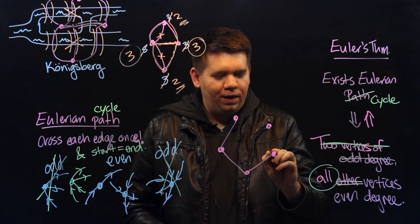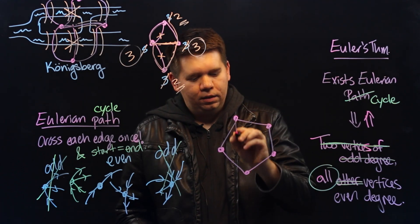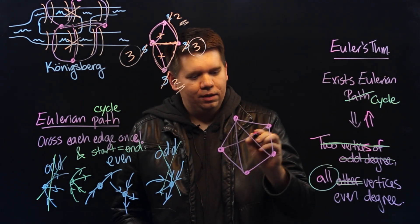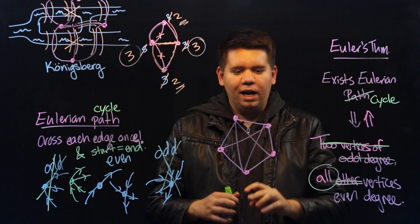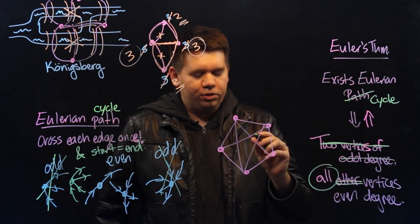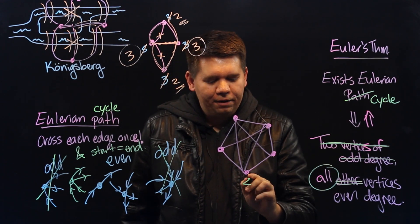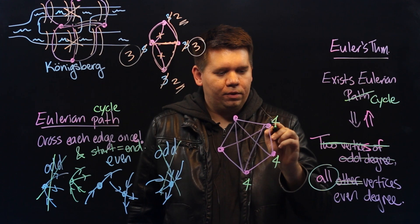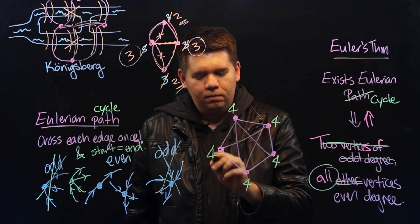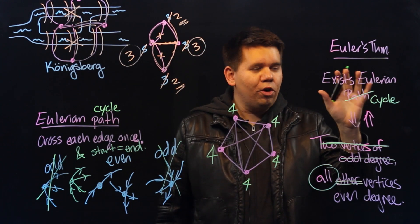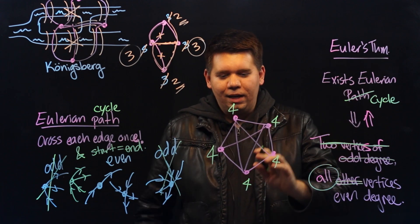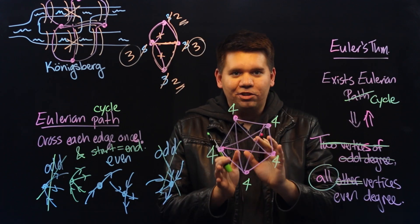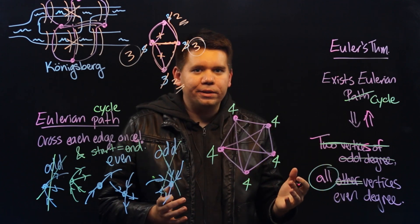then you'll be able to find an Eulerian cycle in that graph. For instance, here we have a graph where all the vertices have degree 4. So Euler's theorem says you should be able to find an Eulerian cycle inside of this graph. How might you do it?